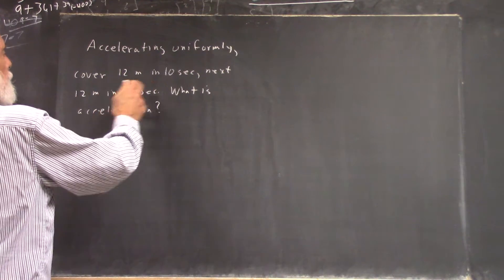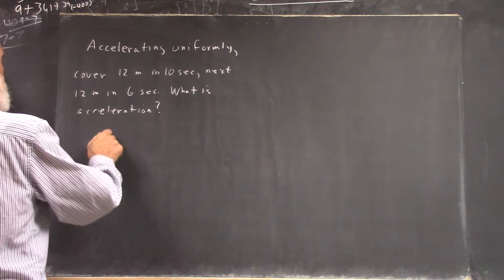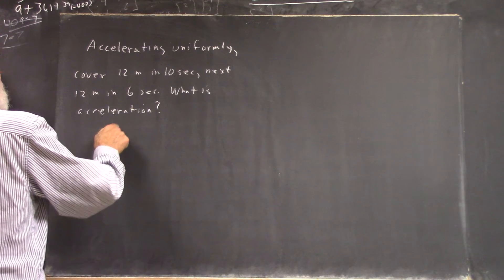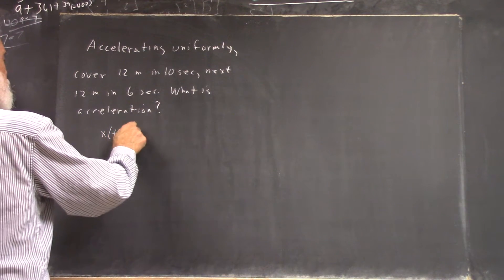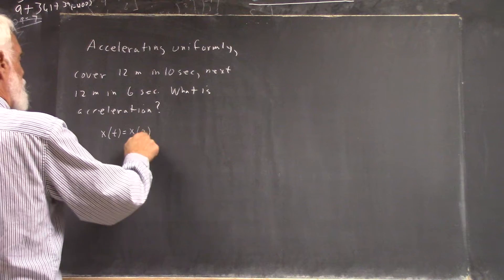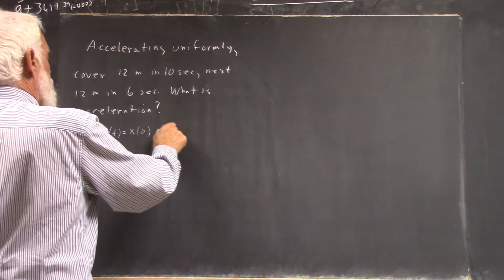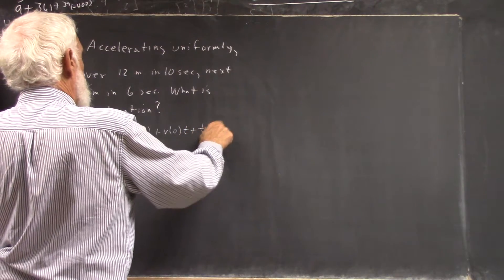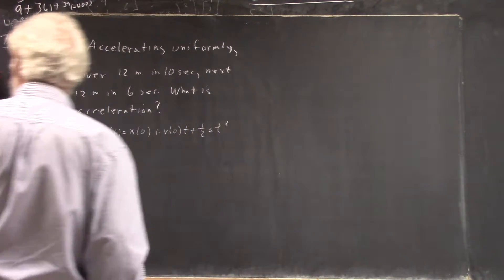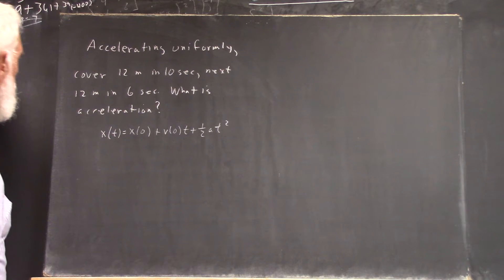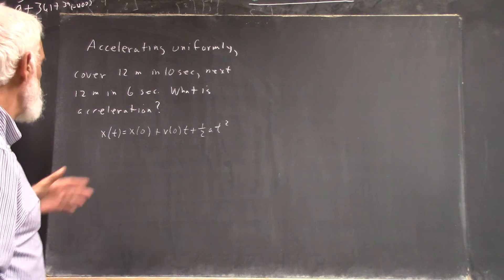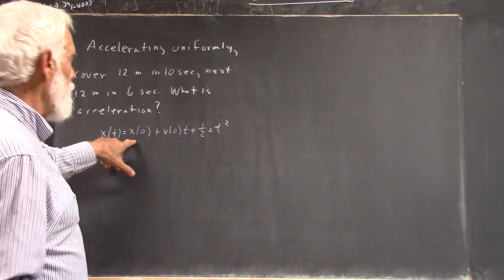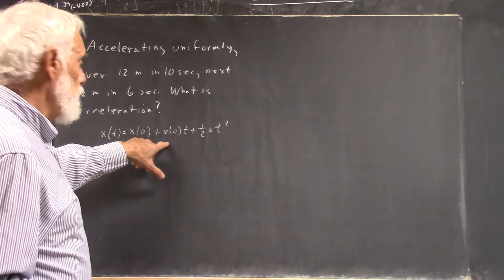So you're talking about how far the thing travels. So we can say, of course, if acceleration is uniform, x(t) equals x(0) plus v(0) times t plus 1/2 a t squared. Now we don't know what x(0) is. We don't know what v(0) is.